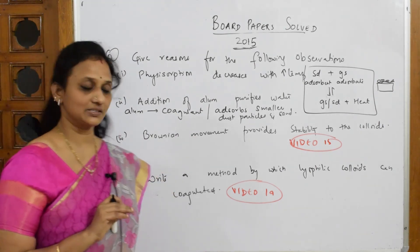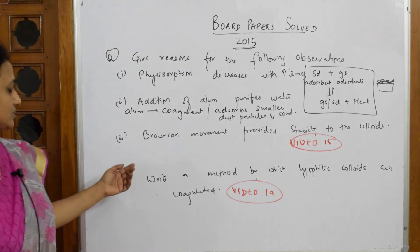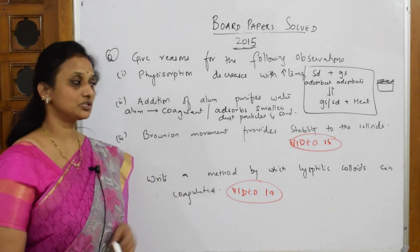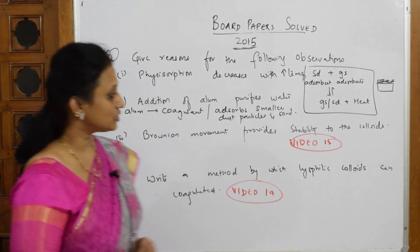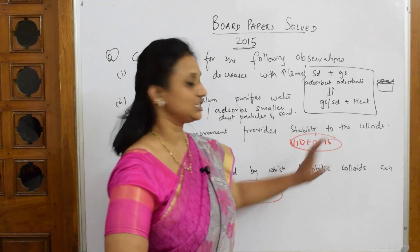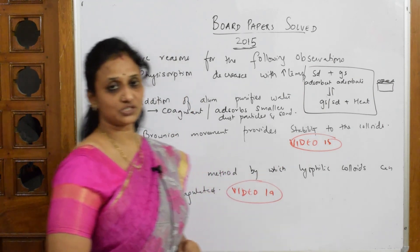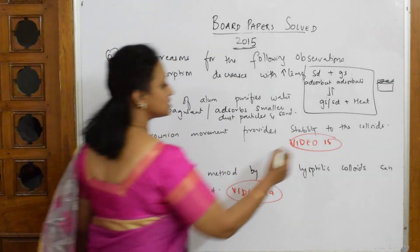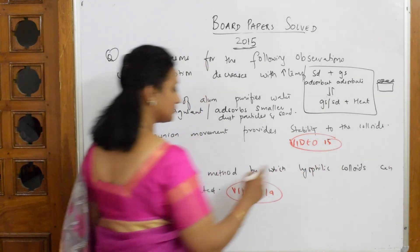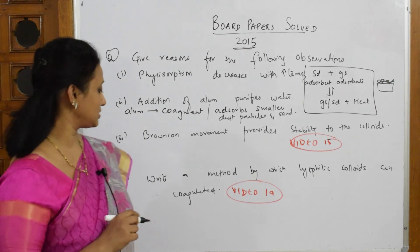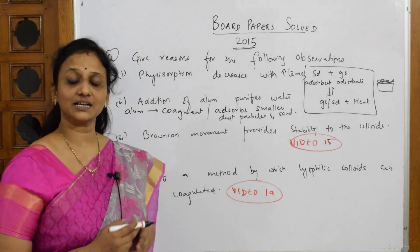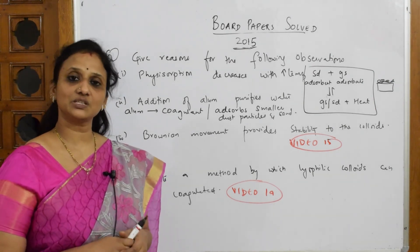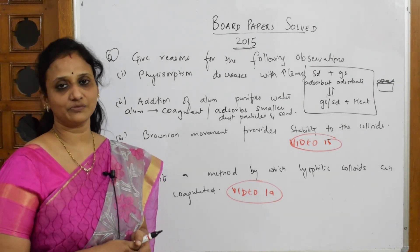The next question is: Brownian motion provides stability to colloids — I covered this in video number 15, please watch that. And the question on what method is used by which lyophilic colloids are coagulated — I covered this in video number 19, please watch that video for the information.